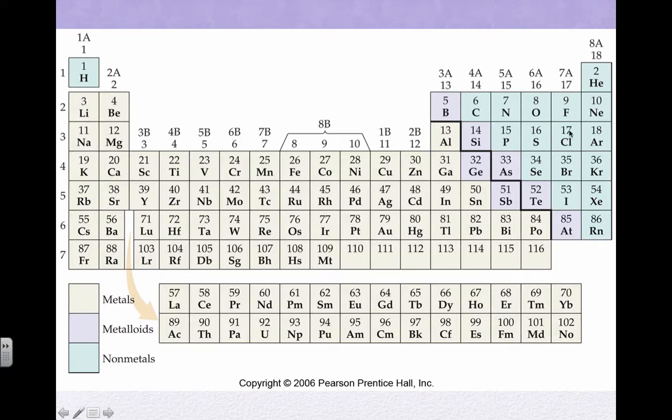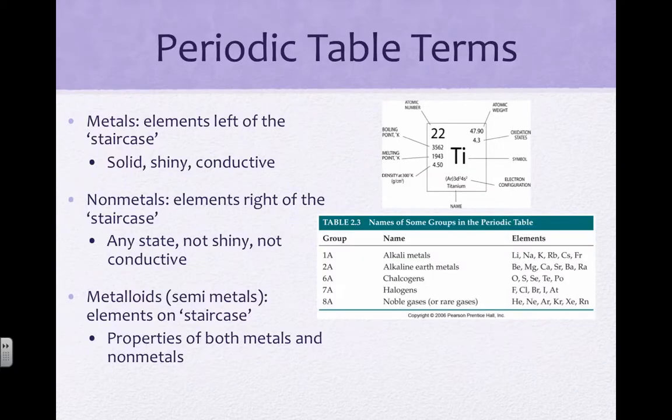Nonmetals can exist in any three forms of matter. They do not conduct electricity well. They're not lustrous. They're not ductile or malleable. And then we have metalloids, which have some properties of metals and some properties of nonmetals depending upon the element itself. So again, here's a summary of what I just said in terms of where metals, nonmetals, and metalloids are.